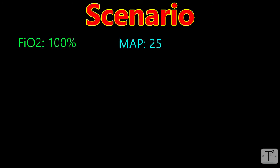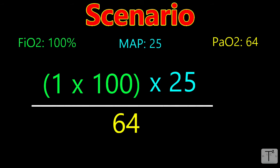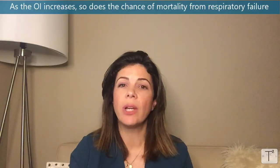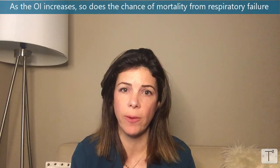For example: a neonate is on 100% FiO2 on the oscillator with a mean airway pressure of 25 cmH₂O, and the arterial gas shows a PaO2 of 64. The OI = (1 × 100 × 25) ÷ 64 = 39. An OI of 39 is quite high — generally the higher the OI, the greater the chance of mortality from respiratory failure.